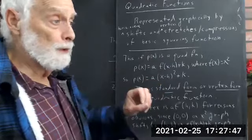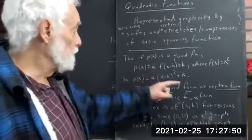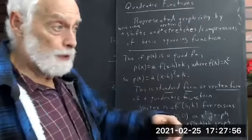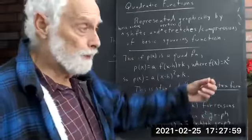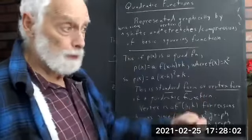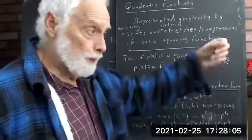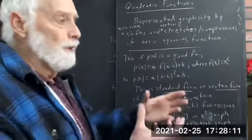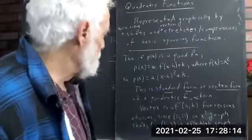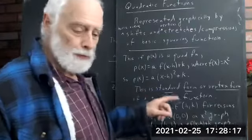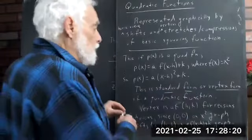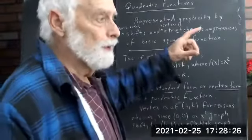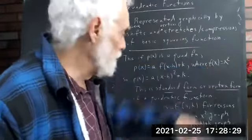Every quadratic function can be expressed this way for the appropriate a, h, and k. The point (h, k) is where the vertex goes — the (0, 0) point of x² goes to (h, k). So your vertex moves to the point (h, k), and the vertical stretch changes the elongation or compression. This is called the standard form, or vertex form, of the quadratic function, and it comes directly from shifts and stretches on the basic squaring function.